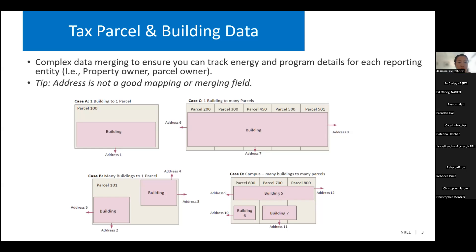In case D, we have building five, which is across multiple different parcels, has two different addresses, and has common parcels with other properties as well. When you think about the complexity of mapping and merging data from different sources, you really need to have something to string that building across different types of data sources so that you can map and merge a bunch of properties together. When getting information from both the tax assessor data and maybe an internal document, it's good to have a unique ID.